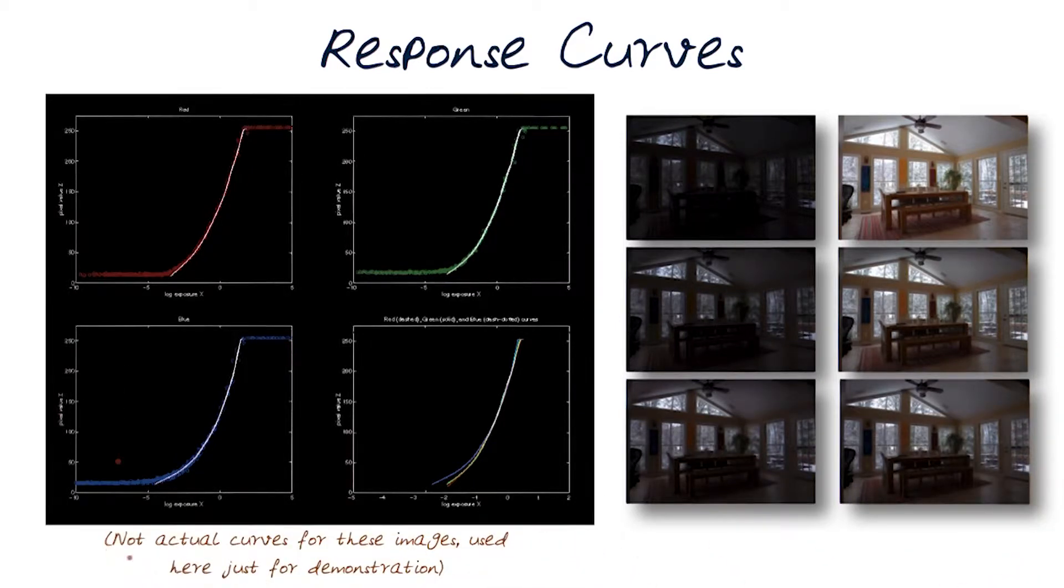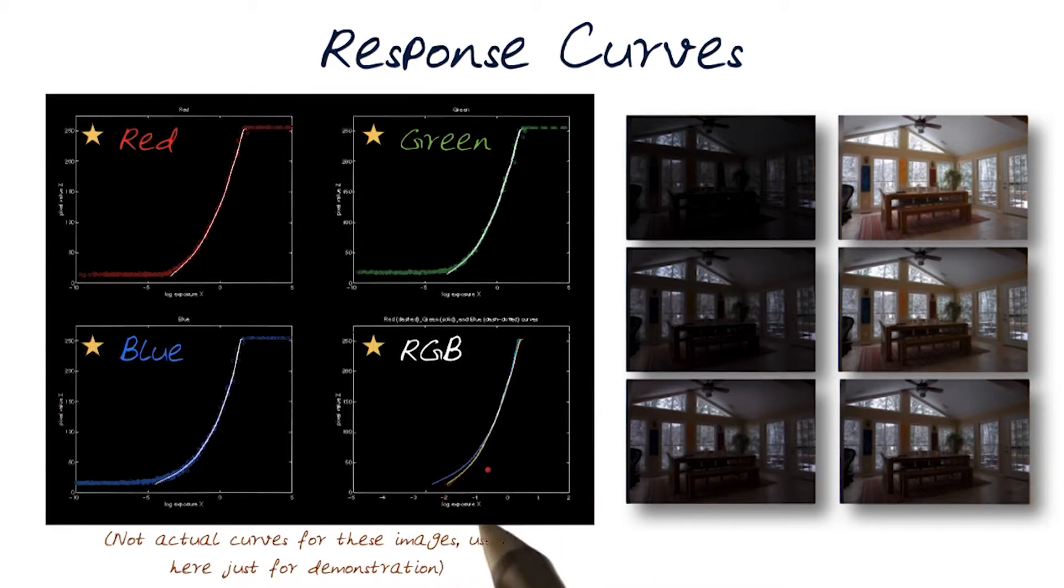Here you see the four curves. This one is for green, this is for red, for blue, and then all three of them combined to RGB. This is to point out that we can actually do this analysis separately for all of the different channels and then combine it separately.